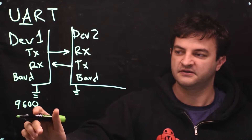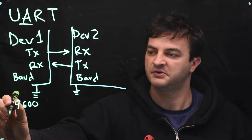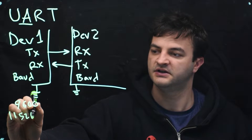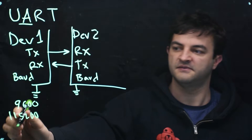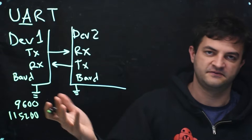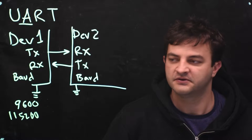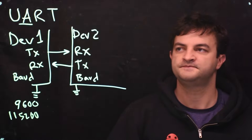So that would be a relatively slow baud. A faster baud that's common would be 115200, and there are all kinds of factors of two. There's a big table you can look up to see what the common bauds are.